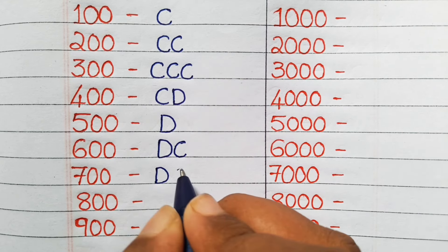For eight hundred we write it as DCCC in Roman numbers, and for nine hundred we write CM.